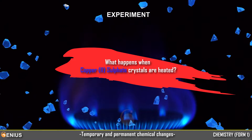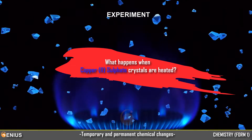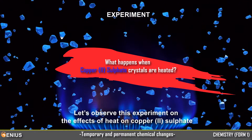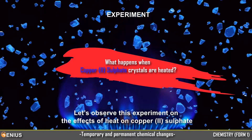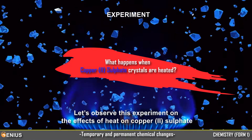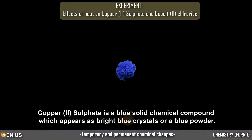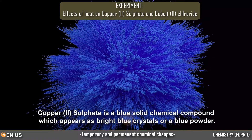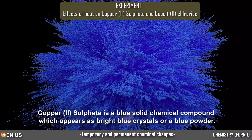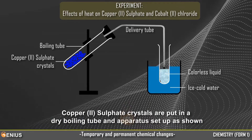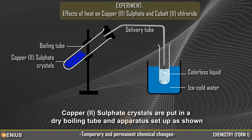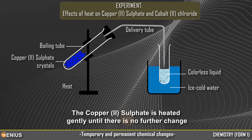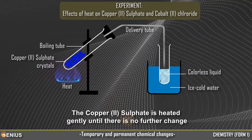Experiment: What happens when copper-2-sulfate crystals are heated? Let's observe this experiment on the effects of heat on copper-2-sulfate. Copper-2-sulfate is a blue solid chemical compound which appears as bright blue crystals or a blue powder. Copper-2-sulfate crystals are put in a dry boiling tube and apparatus set up as shown. The copper-2-sulfate is heated gently until there is no further change.